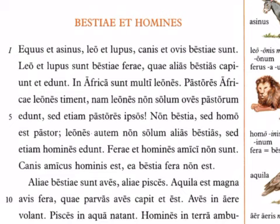Non bestia sed homo es pastor — a shepherd is not an animal but is a human being. Literally it's 'not an animal but a person is a shepherd,' but we would normally use a different word order. Leones autem non solum alias bestias sed etiam homines edunt — the lions not only eat other animals but also eat human beings. Ferae et homines amici non sunt — wild animals and humans are not friends. This is generally the case; people who try to be buddy-buddy with wild animals can be in very dangerous situations.